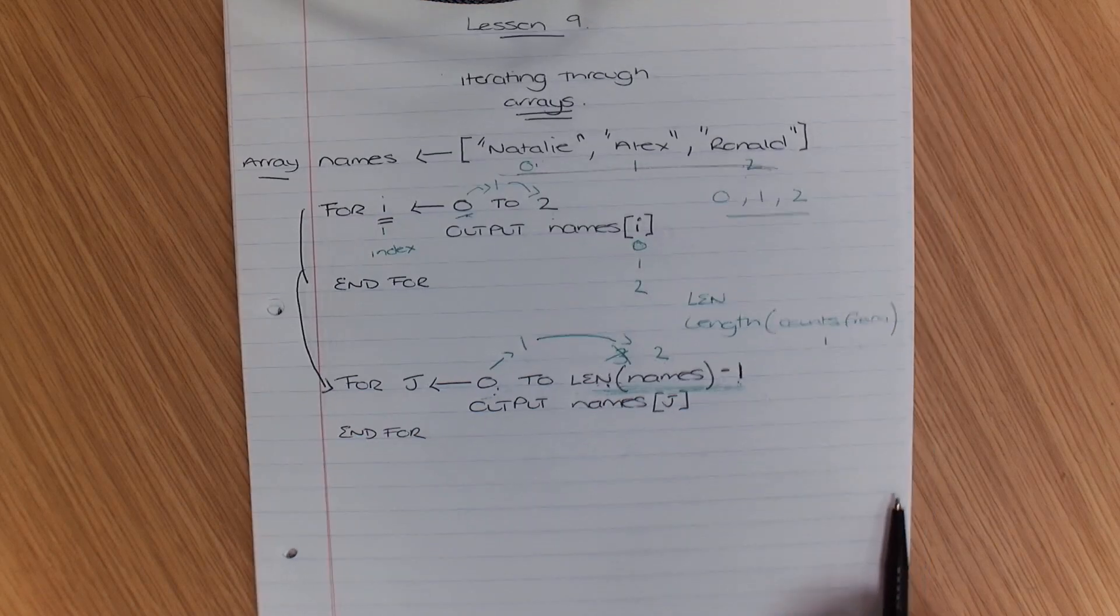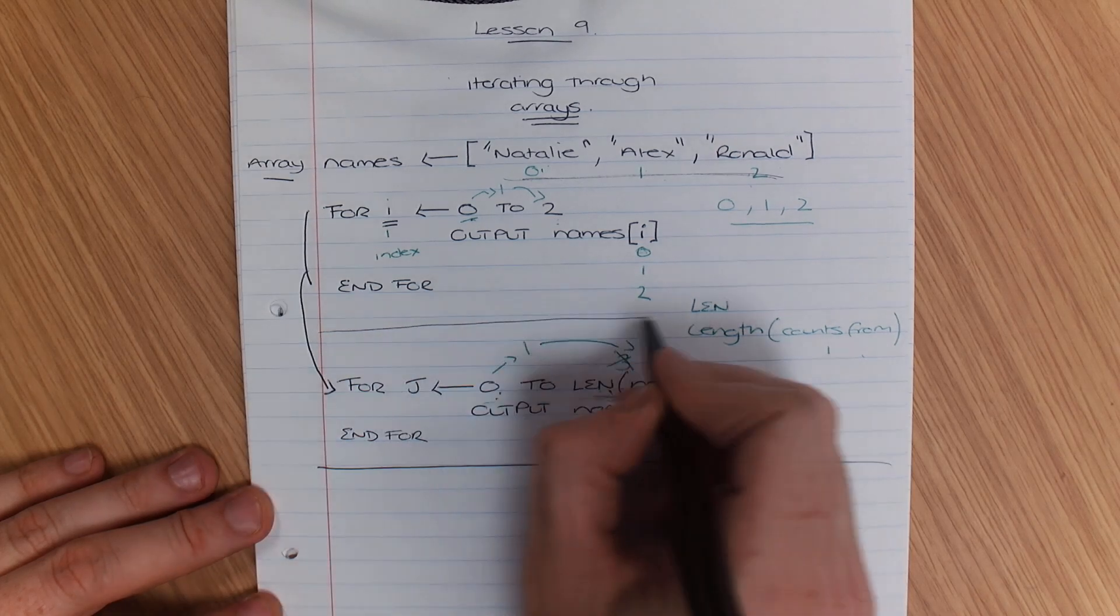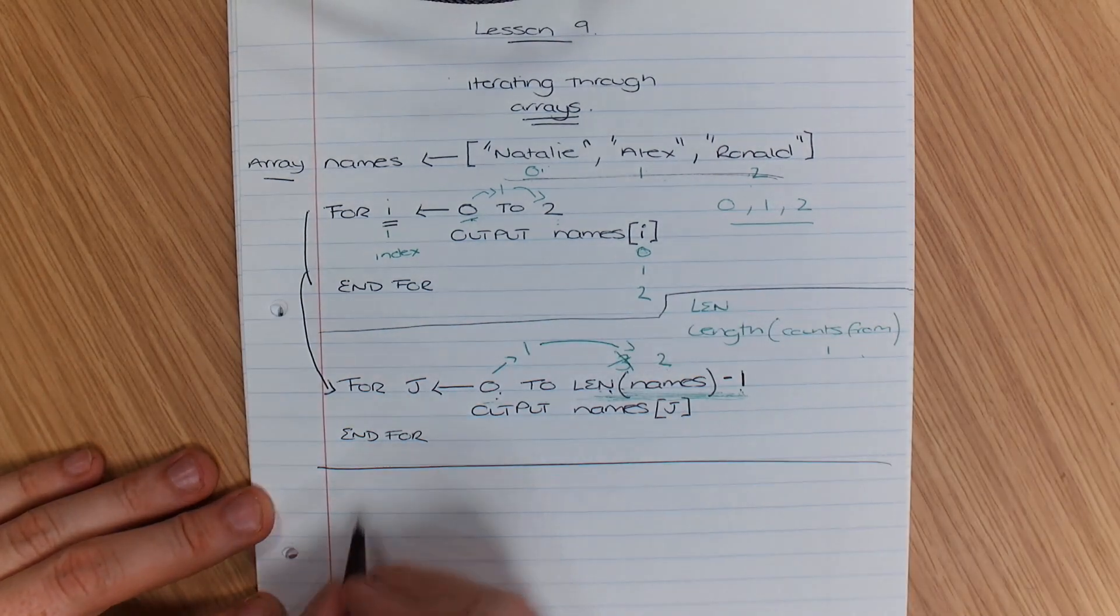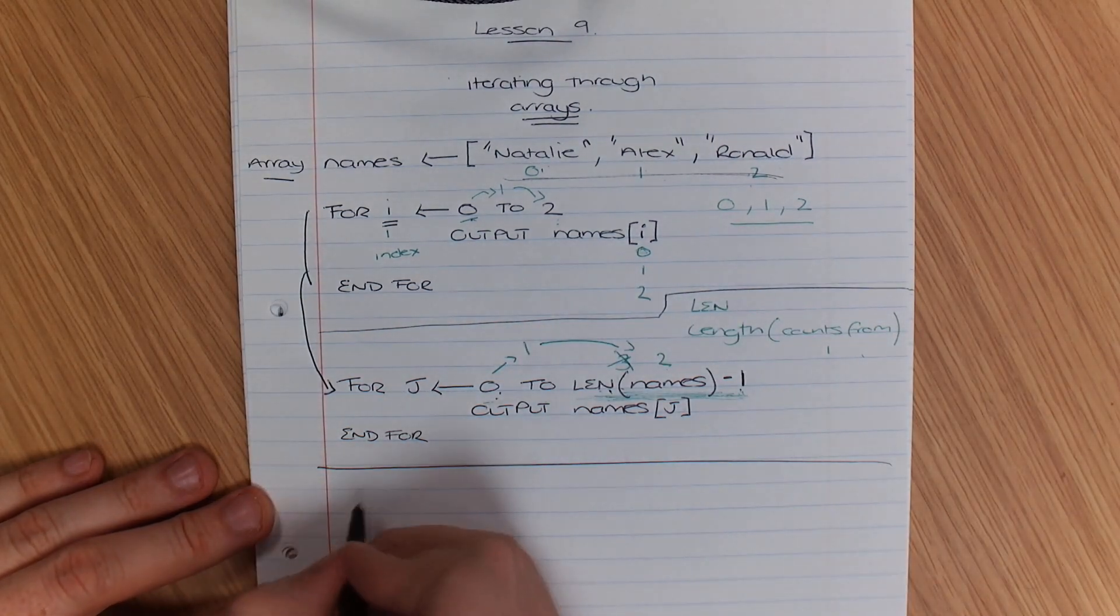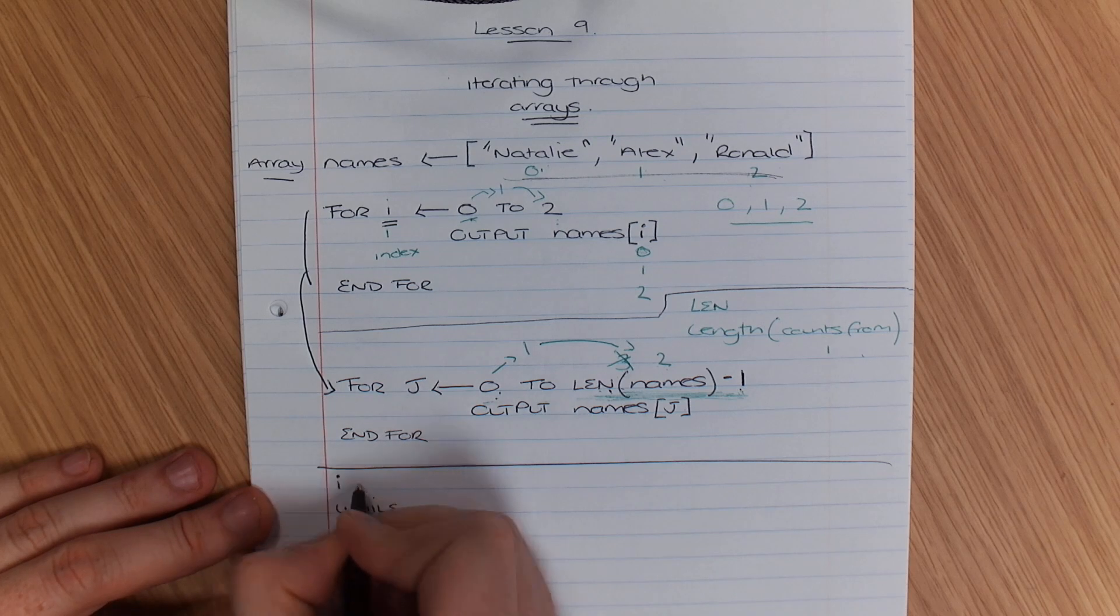Some people may approach this with a while loop. So I'm going to show you another way of going through this now. Some people might say while, in fact, I'm going to put i is equal to 0.